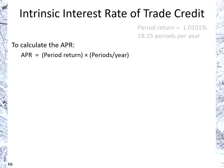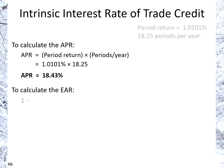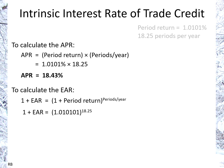The APR is simply the period return times the number of periods in a year, giving us a grand total of 18.43%. The EAR uses a power law, of course, because of the compounding effect, and that gives us a result of 20.13%. So that's a very good return for paying early.